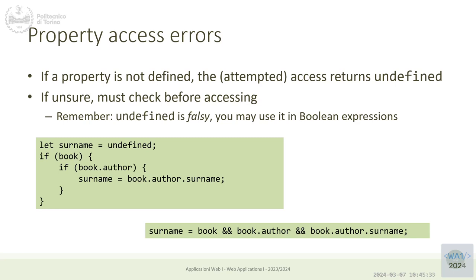What happens if you try to read a property that doesn't exist? JavaScript doesn't throw any error — it returns `undefined`. So it's not an error to access a non-existing property; it's actually a way of checking whether that property exists. Since `undefined` is one of the few values interpreted as false, you can write `if (book && book.author)` to check whether the book variable is defined and contains an author property.